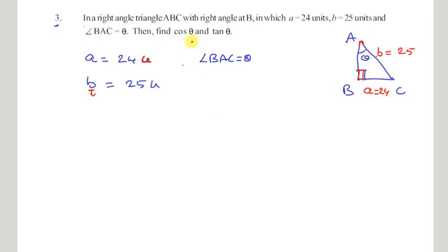What we are asked to find is cos theta, which means cos A. To find cos A, we require the adjacent side to angle A. What is the adjacent side to angle A? Other than hypotenuse, the adjacent side is AB. Do we know the measurement of AB? As of now, we don't know the measurement of AB. So firstly, we need to find the measurement of AB.